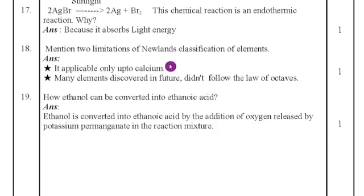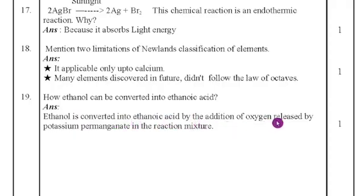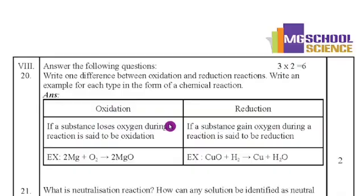Eighteenth question: mention two limitations of Newland's classification of elements. First, it was applicable only up to calcium, and many elements discovered later did not fit. Second, it did not follow the law of octaves consistently. Nineteenth question: how can ethanol be converted into ethanoic acid? Ethanol is converted into ethanoic acid by the addition of oxygen released by potassium permanganate in the reaction mixture.